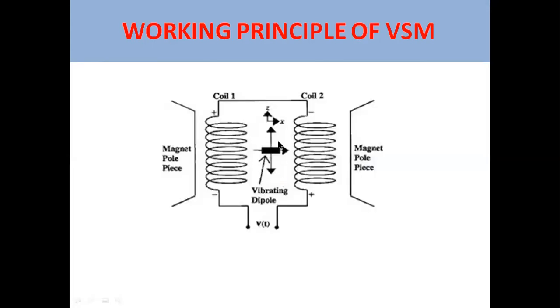We use a sample magnetized by homogeneous magnetic field. If we keep a sample here in a magnetic field in the coil, when it vibrates, it will produce an electric field. This is the working principle.